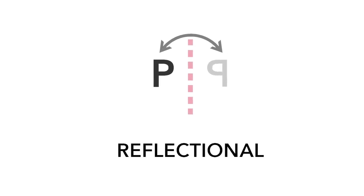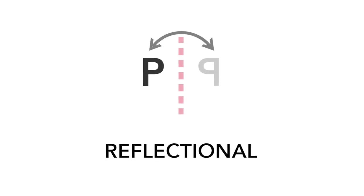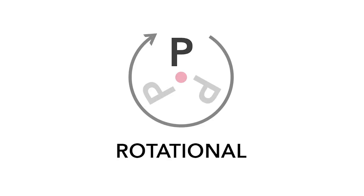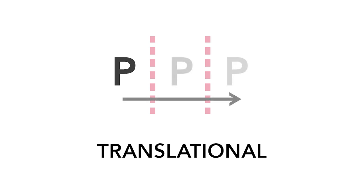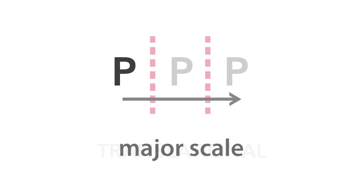When most people think of symmetry, they think of reflectional or mirror symmetry. But to explain each type — if the letter P here means pattern — then translational symmetry just means to repeat the pattern like this. Nothing is reflected; the pattern P is simply repeated.